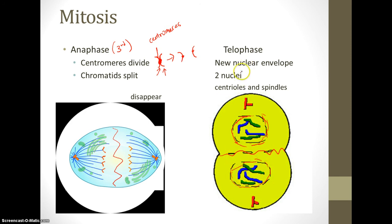We have two visible nuclei. We can see the nucleus once the nuclear envelope appears. Centrioles and spindles start to disappear—they disintegrate. This is telophase, and this is also the final stage of mitosis.